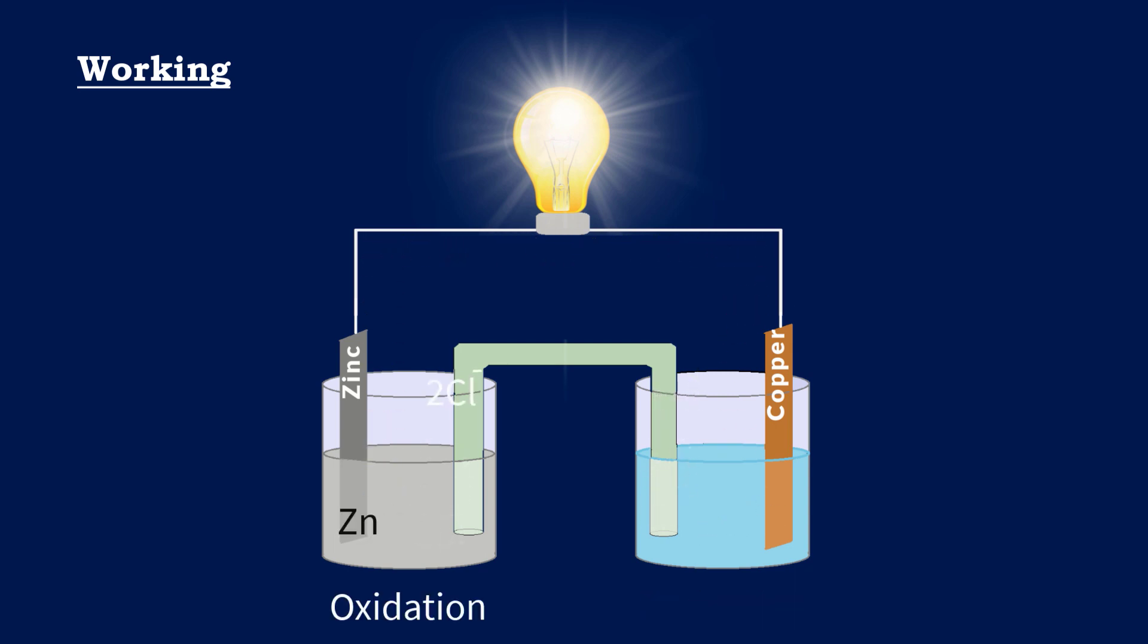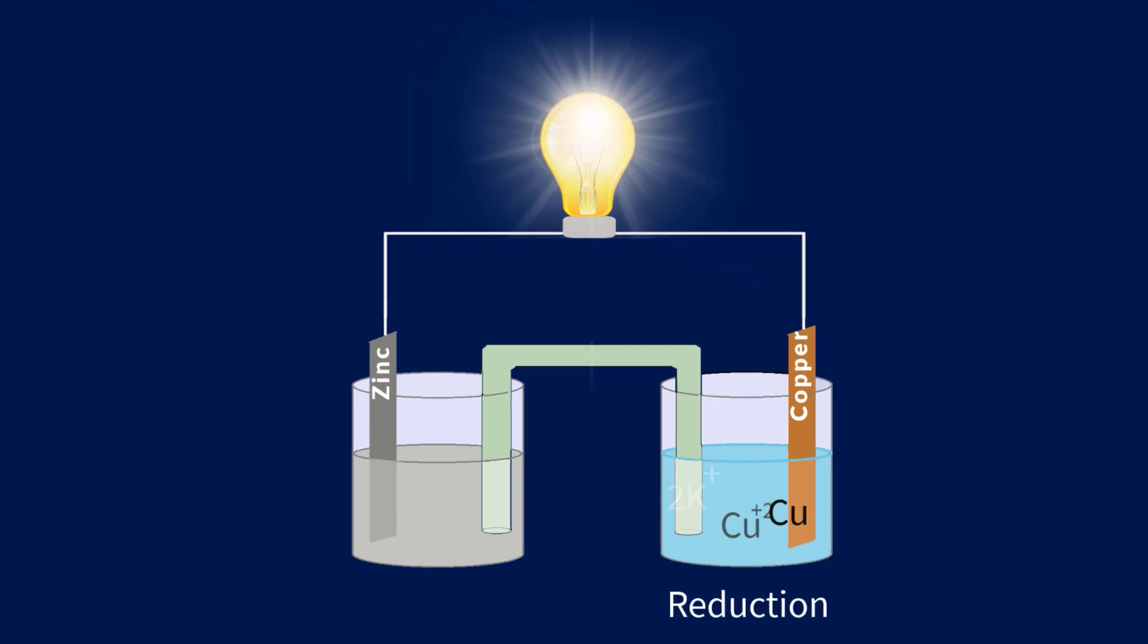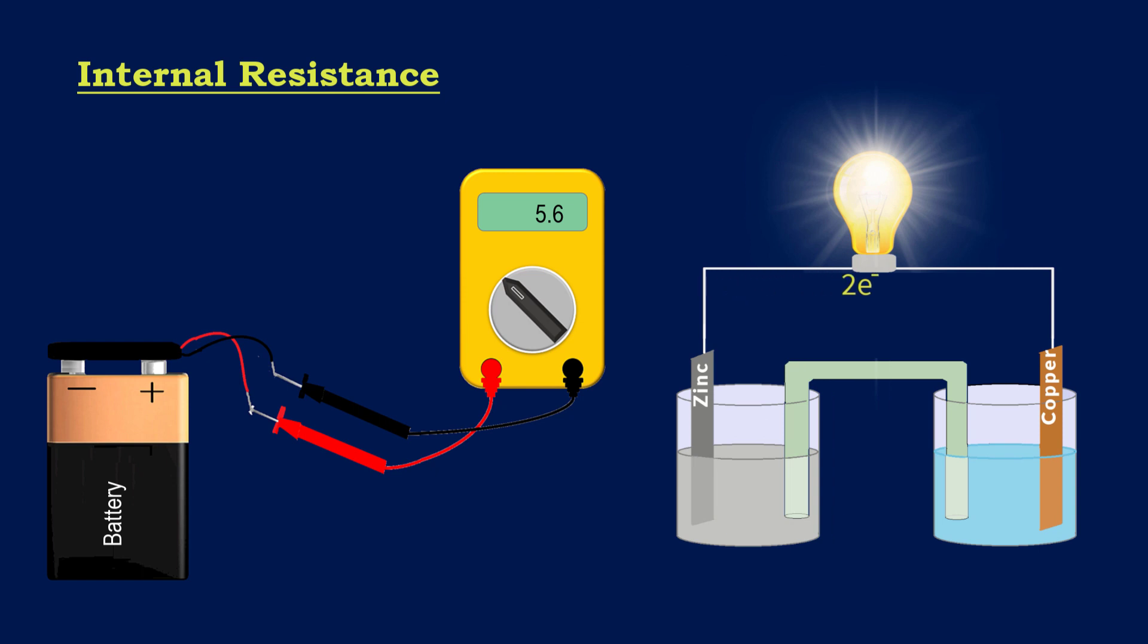Notice that the anode, cathode, and electrolyte are all not perfect conductors. That is why there is some resistance between the terminals of the battery. This resistance is referred to as internal resistance, which decreases the terminal potential difference across the source when there is current.